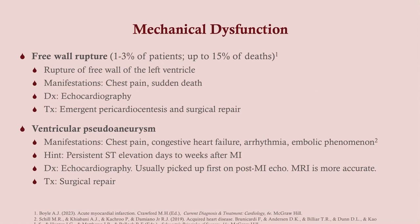Free wall rupture is catastrophic. Depending on the size of the rupture, you may be able to save these patients, but the vast majority die. Blood spills from the heart into the pericardial space, causing cardiac tamponade; these patients go into shock and die. Treatment, if you can get to them, is pericardiocentesis and emergent surgical repair. Ventricular pseudoaneurysm is a ballooning of the heart, usually at the apex. These patients have chest pain, CHF symptoms, and can even get embolic phenomena — blood pools at the aneurysmal site, a clot forms, and because this tends to be the left ventricle, it can go to the cerebral circulation. Diagnosis is echo and treatment is surgical repair.